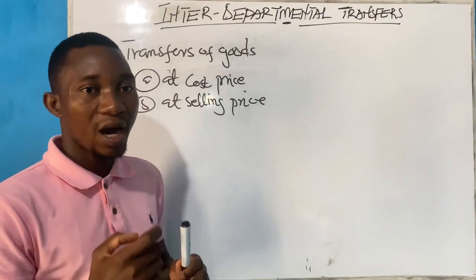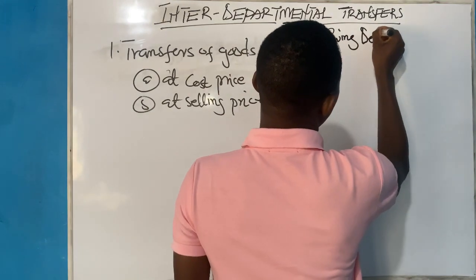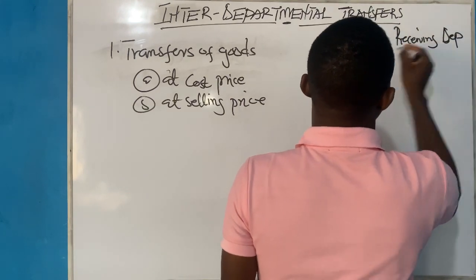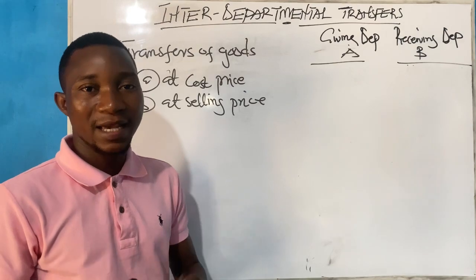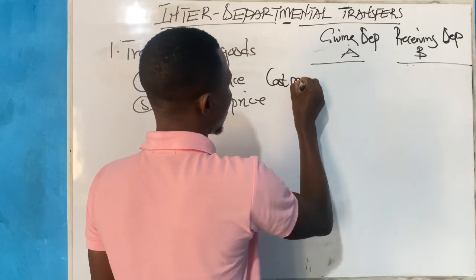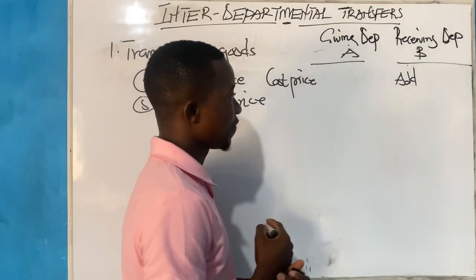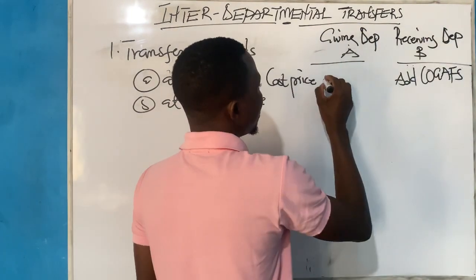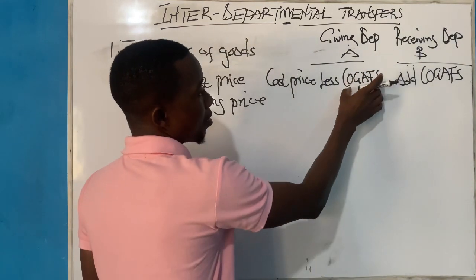Let me use two departments to show you how it works. Let's say this is the giving department — Department A — and this is the receiving department — Department B. When goods are transferred at cost price, we add the cost of goods transferred to the cost of goods available for sale of the receiving department, then deduct it from the cost of goods available for sale of the giving department.